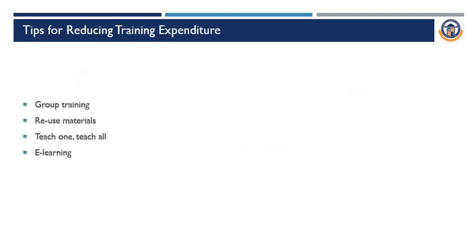Next, we shall see some tips for reducing training expenditure. First is group training — earn volume discounts by training numerous employees at once. Next, reuse the materials, as training materials such as videos have a long shelf life and may be used repeatedly. Next is 'teach one, teach all' — send one employee for on-site training but have them present their knowledge to the remaining staff. Electronic options like e-learning are cheaper than traditional instructor-led training.